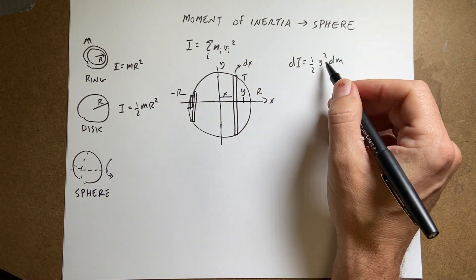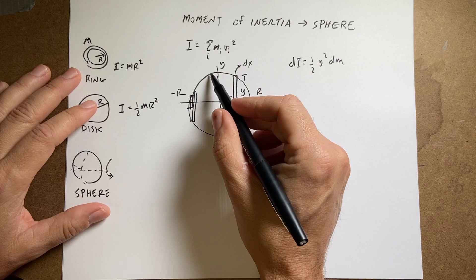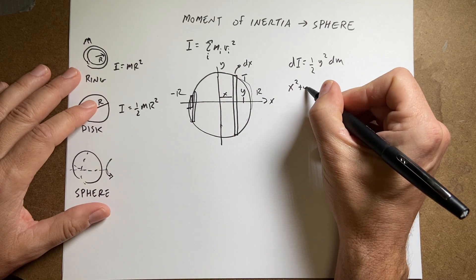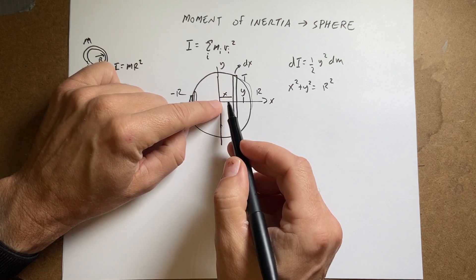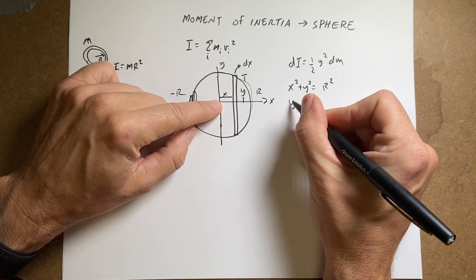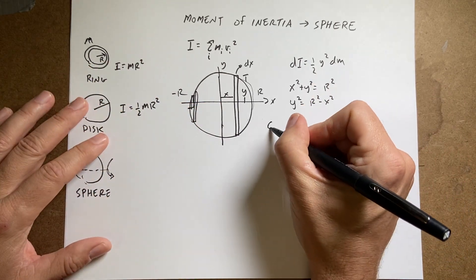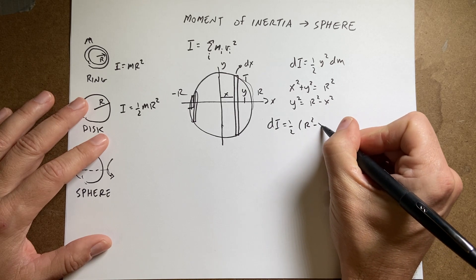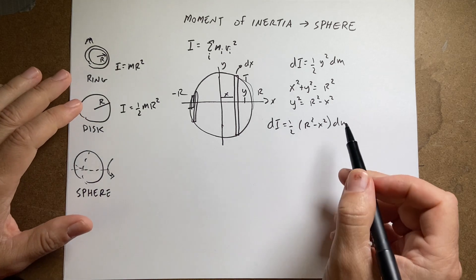Let's start with y. If this is a circle, then x² + y² = r² — that's the definition of a circle centered at the origin with radius r. Solving for y squared: y² = r² − x². I substitute that in and get dI = one-half (r² − x²) dm. That gets rid of the y.